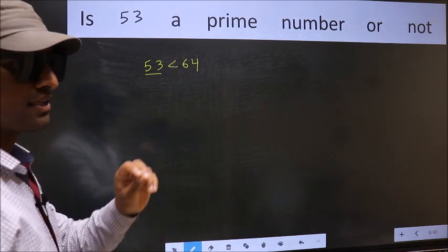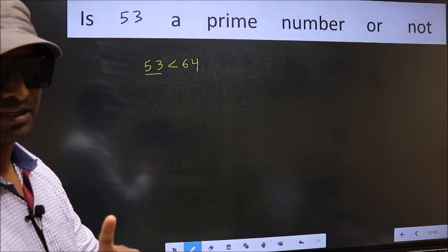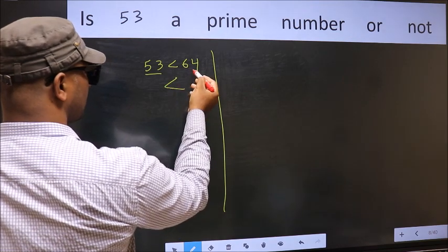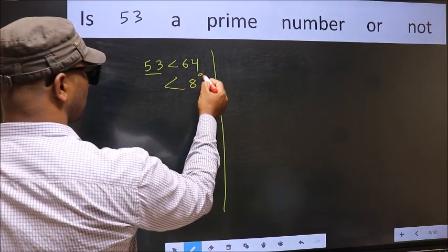This is your step 1. Next, 64 is nothing but 8 square.